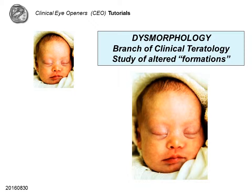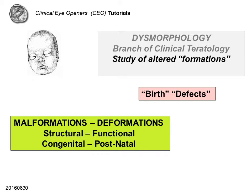What is dysmorphology? In essence, the term means the study of altered formation. It is important to underscore that the consequence of altered formation is an altered function far more frequently than a perceptible alteration of form or dysmorphic signs. Official medical dictionaries define dysmorphology as a branch of clinical teratology. The vernacular term in the United States is birth defects, but at least I view the terms birth and defect as somewhat misleading.